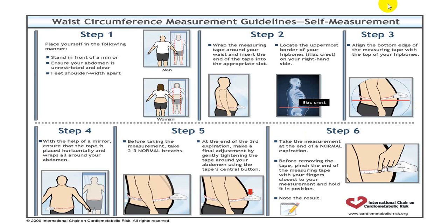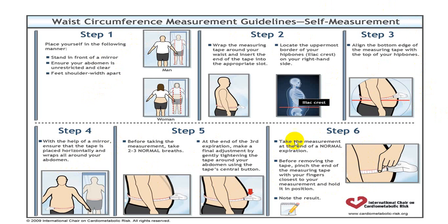Waist circumference measurement is very important and must be done properly to avoid false readings and false interpretation regarding obesity. The slide shows how waist circumference should be measured — follow all steps correctly: step one through step six — and only then can you accurately label whether a person has increased waist circumference.